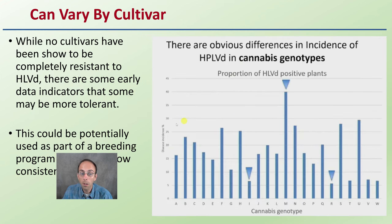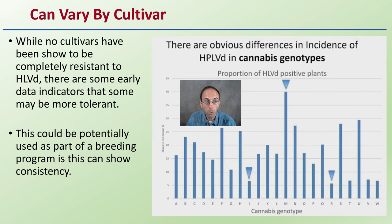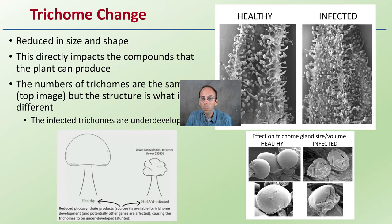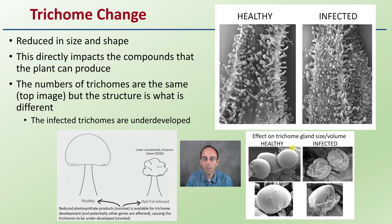This can vary by cultivar, and this is gaining a lot of interest, and rightfully so. While there are no cultivars that have been shown to be completely resistant to Hop Latent Viroid, there are some early data indicators that some may be more tolerant than others. This could potentially be used as part of a breeding program. Right now it's in the early stages, but there definitely does seem to be some variability — or at least tolerance, since no one's really fully resistant.